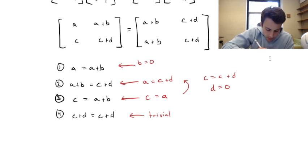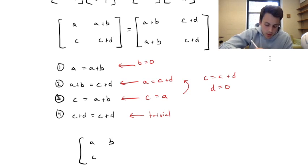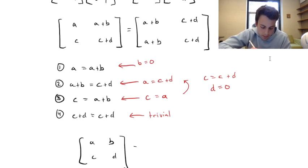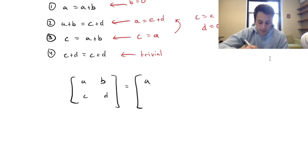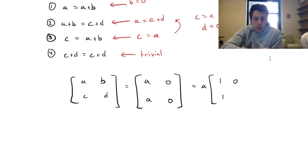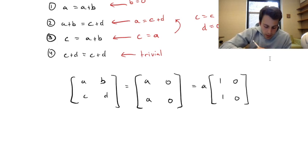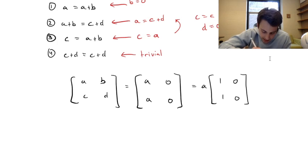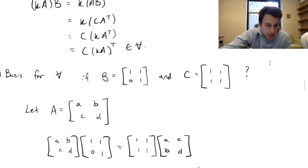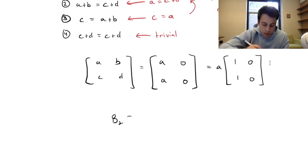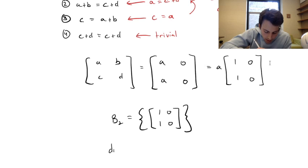So for our general matrix A with entries a, b, c, d — we have b = 0, c = a, and d = 0. Factoring out a, we get a times the matrix [[1,0],[1,0]]. The basis B2 is just this single matrix, and the dimension of this vector space is one.